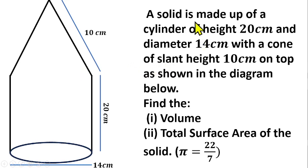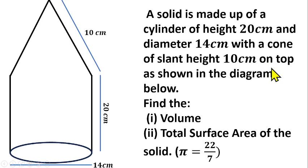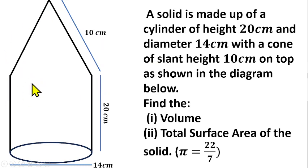We are told that this solid shape is made up of a cylinder of height 20 centimeters and a diameter of 14 centimeters, with a cone of slant height 10 centimeters on top, as shown in the diagram below. We are to find the volume and the total surface area of the solid. So we have a cone mounted upon a cylinder.